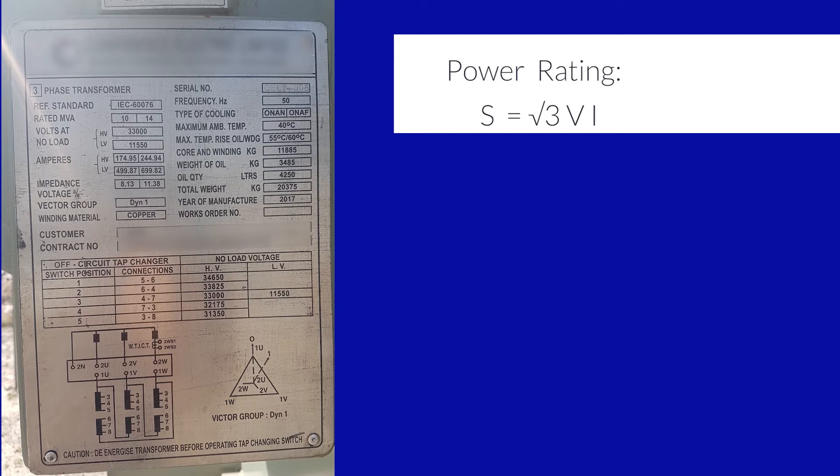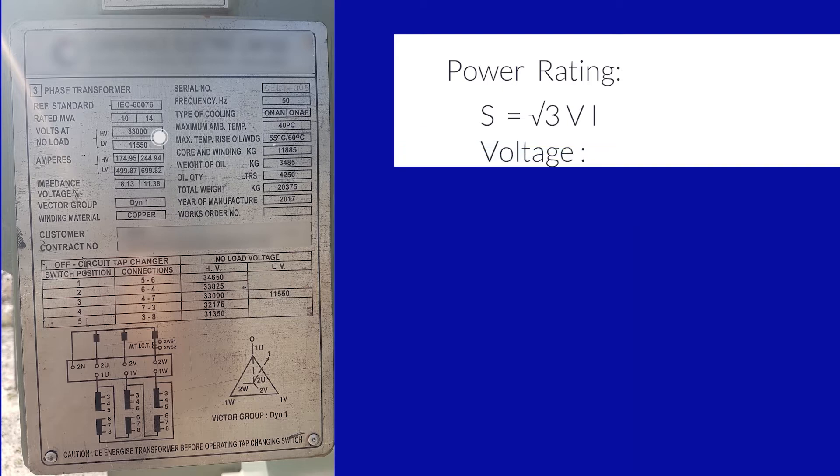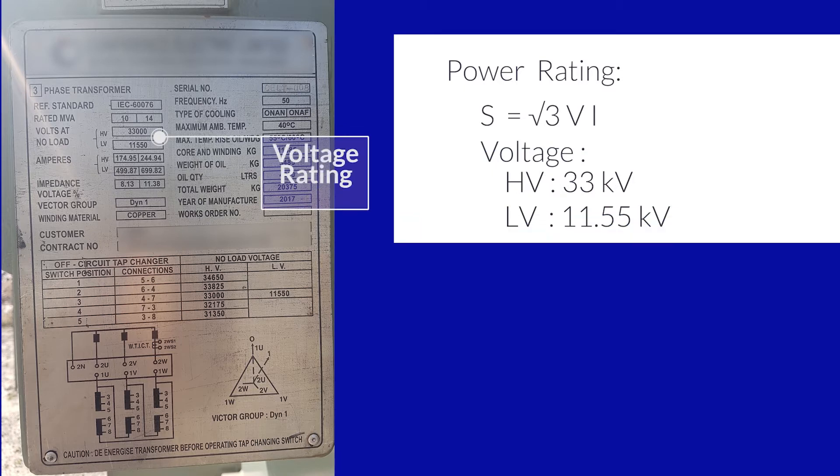Next, you can see voltage at no load is written. In HV side, voltage is 33,000 or 33 kV. And LV side is 11,550 or 11.55 kV.